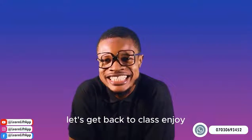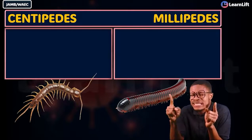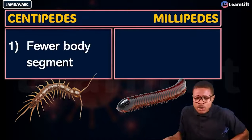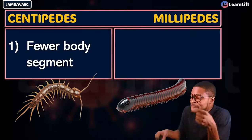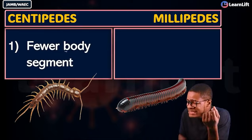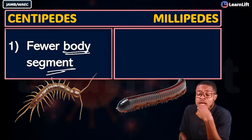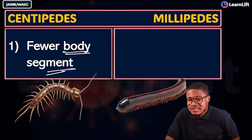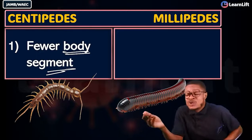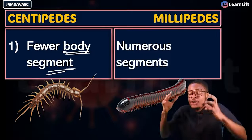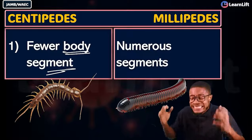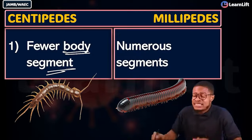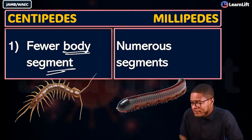The first difference to note: centipedes have fewer body segments. The ones with fewer body segments are the centipedes. Millipedes, on the other hand, have numerous body segments — an abundance of segments.